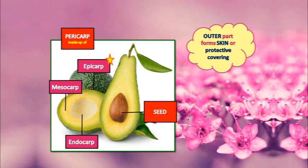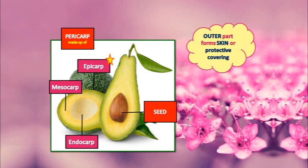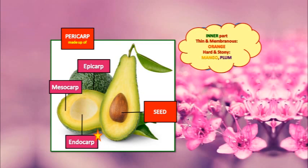Mesocarp is usually fleshy and the edible part of the fruit. However, in some fruits such as almond, the endocarp is the edible part. In many fruits, two or all three of the layers are fused and are indistinguishable at maturity. Fruits can be dry or fleshy, and can be divided into dehiscent or indehiscent types. Dehiscent fruits such as peas readily release their seeds, while indehiscent fruits like peaches rely on decay to release their seeds. The middle part is usually pulpy or juicy, and the inner part is thin and membranous — hard and stony — as seen in mango and plum.